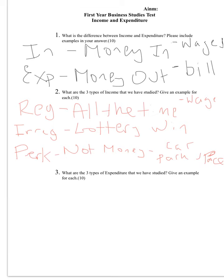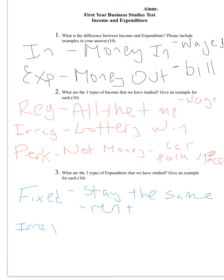Question three asks: what are the three types of expenditure we have studied, and give an example for each? The first one is fixed — this means the expenditure stays the same, the amount will stay the same, something like rent. It's a fixed amount that we pay out each month. The second one is irregular — this means the amount changes, and this could be something like a bill, because they depend on usage. You might use the heat in your house more at Christmas because it's cold than you would during summer, so the amount you use determines how much you pay.